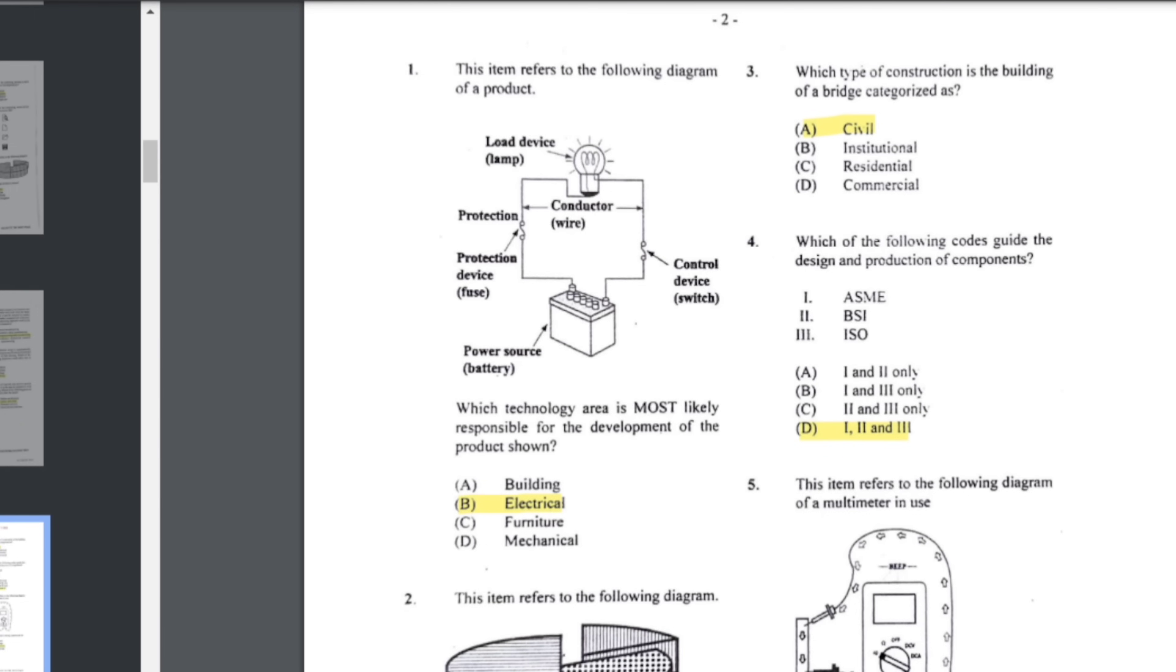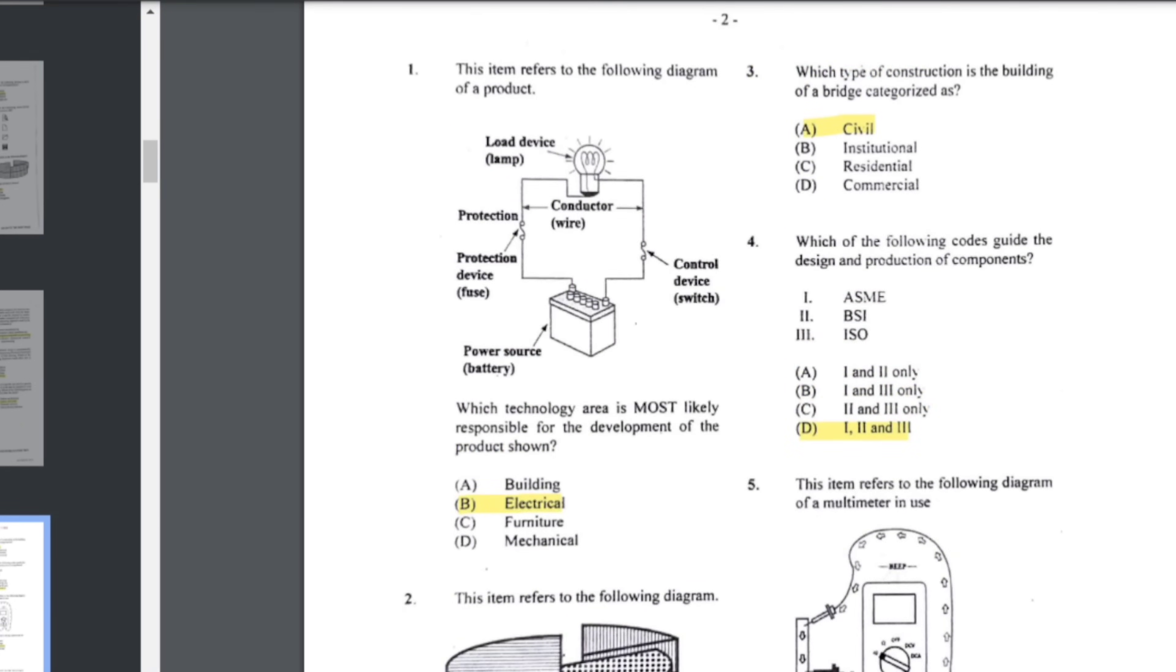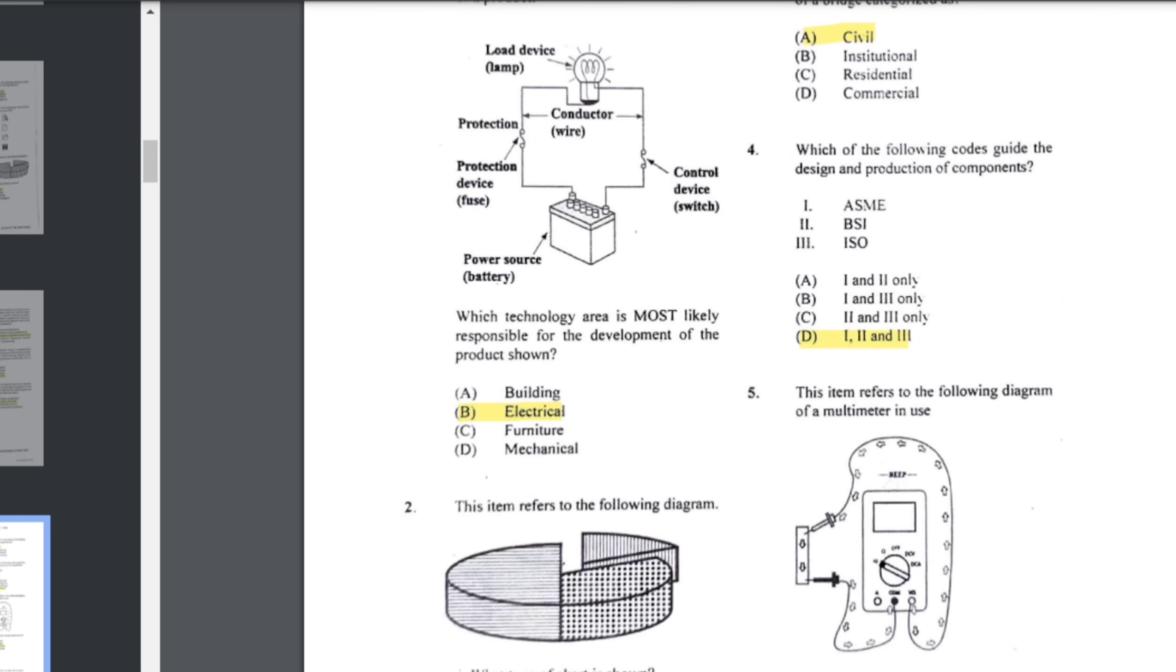For number one, it says this item refers to the following diagram: which technology area is most likely responsible for the development of the product shown? For this one, it's electrical. Number two says this item refers to the following diagram: what type of chart is shown? It is a pie chart. Number three says which type of construction is the building of a bridge categorized as? It's a bridge, so it's civil. Which of the following codes guide the design and production of components? That would be all three of those codes.